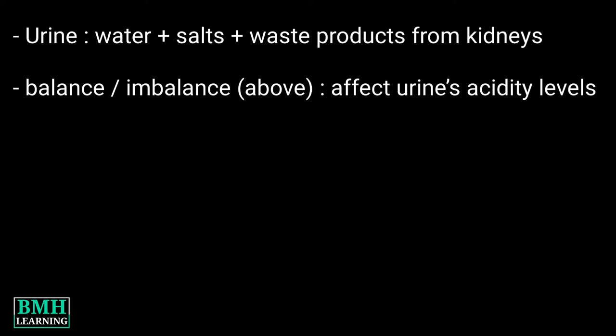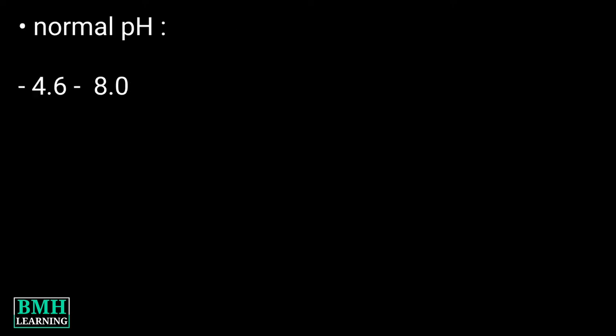Acidity levels are measured in pH. pH is the measurement of how acidic or alkaline a person's urine is. Normal pH varies from 4.6 to 8.0. Causes of abnormal pH: alkaline urine can be